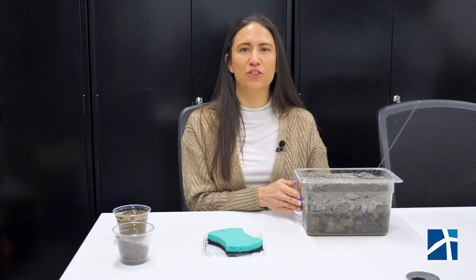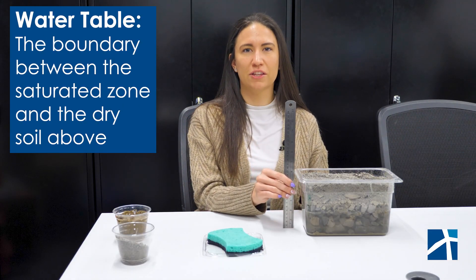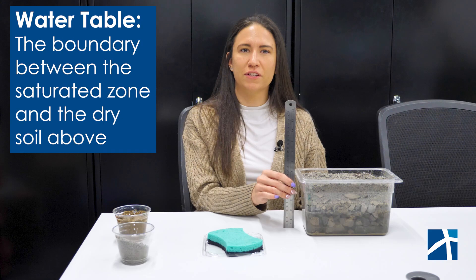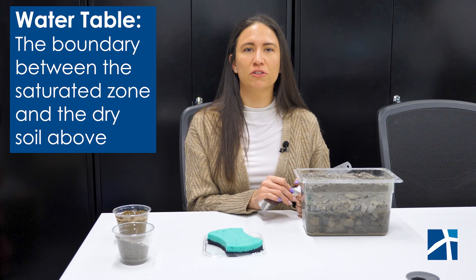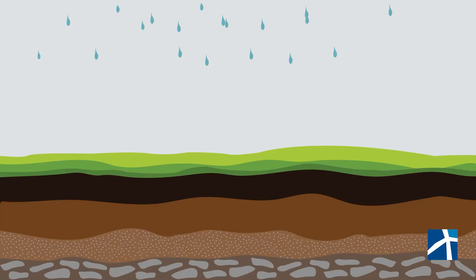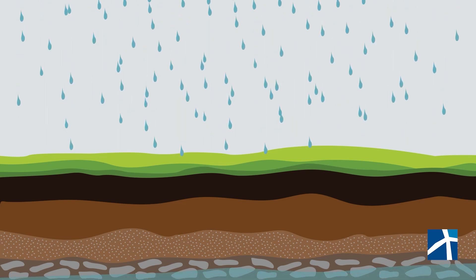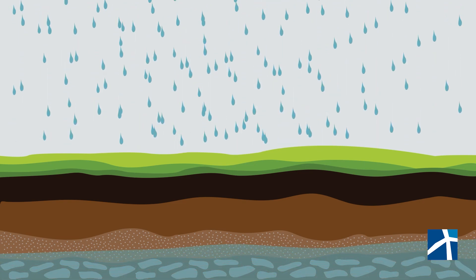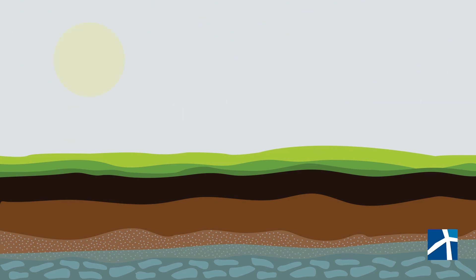In this container, the water level is approximately three inches. The distance from the surface to the water table tells us how deep the water table is. A smaller number means the water table is high; a larger number means the water table is lower. Just like I'm measuring the water level in this container, scientists and engineers measure real water tables underground. It is important to note that the water table doesn't stay in one place — it moves up and down depending on rainfall, droughts, and how much water people pump out of the ground.